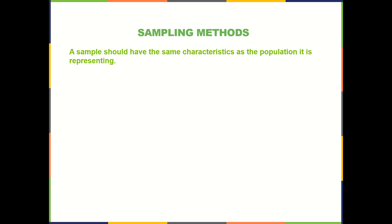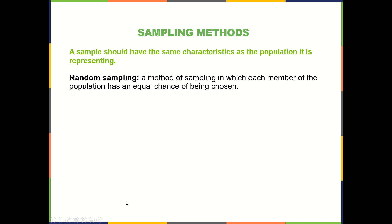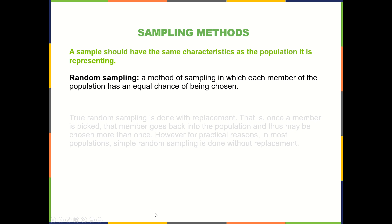That's the whole point. We're trying to infer something about a population. We don't want to have to ask every member of the population, so we're going to take a sample and try to do that in a way that really represents the population as well as possible given whatever resources we have available for data collection. Random sampling is a good way of minimizing sampling bias — this is where every individual of the population has an equal chance of being chosen.